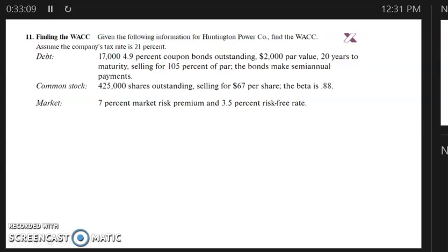Okay, Chapter 13, number 11. So we're going to do another weighted average cost of capital problem here. Given the following information for Huntington Power Company, find the weighted average cost of capital.